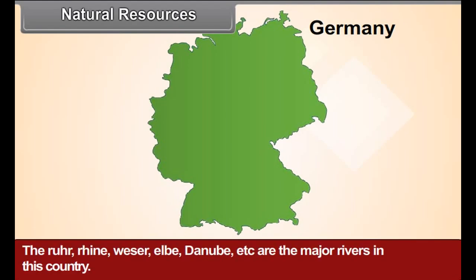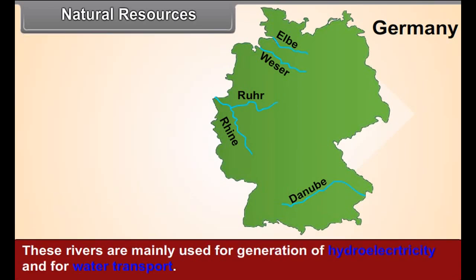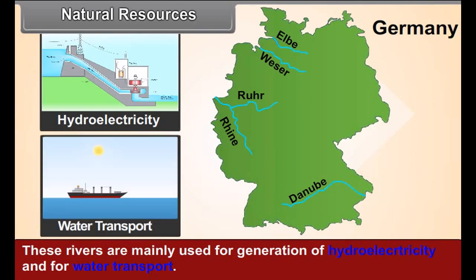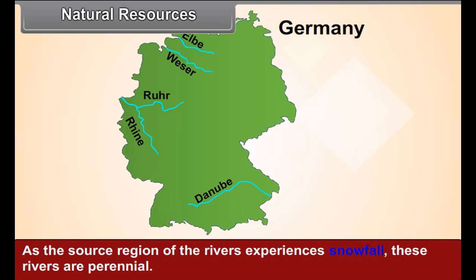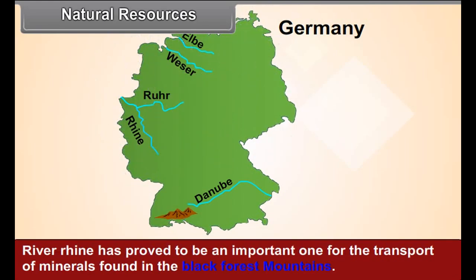The Ruhr, Rhine, Weser, Elbe, Danube, etc. are the major rivers in this country. These rivers have developed a fertile region and are mainly used for generation of hydroelectricity and water transport. As the source regions of the rivers experience snowfall, these rivers are perennial. River Rhine has proved to be an important route for the transport of minerals found in the Black Forest mountains.